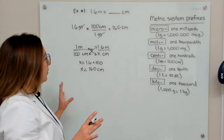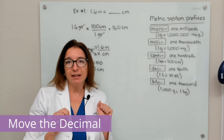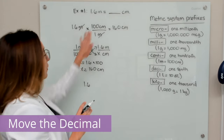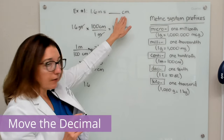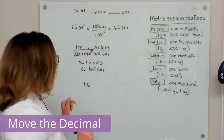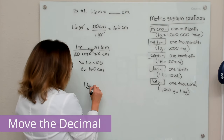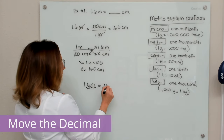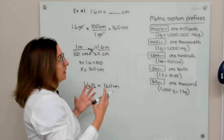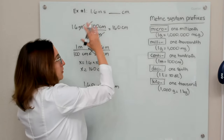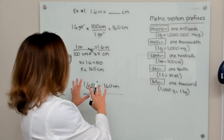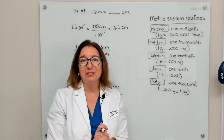Finally, we're going to solve this using the move the decimal point method. We have 1.6 meters, and we are going from a larger unit of measure to a smaller unit of measure with a change of two units, so we move our decimal point to the right two places, ending up with 160. In the next problem we'll be moving the other way — it depends on whether you're going from larger to smaller or smaller to larger. Note that this method only works for metric system conversions.